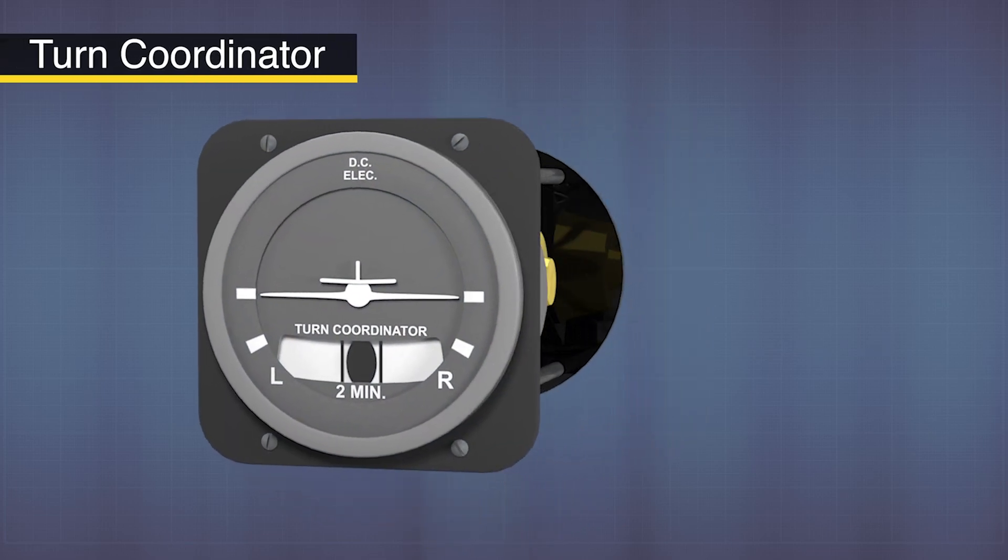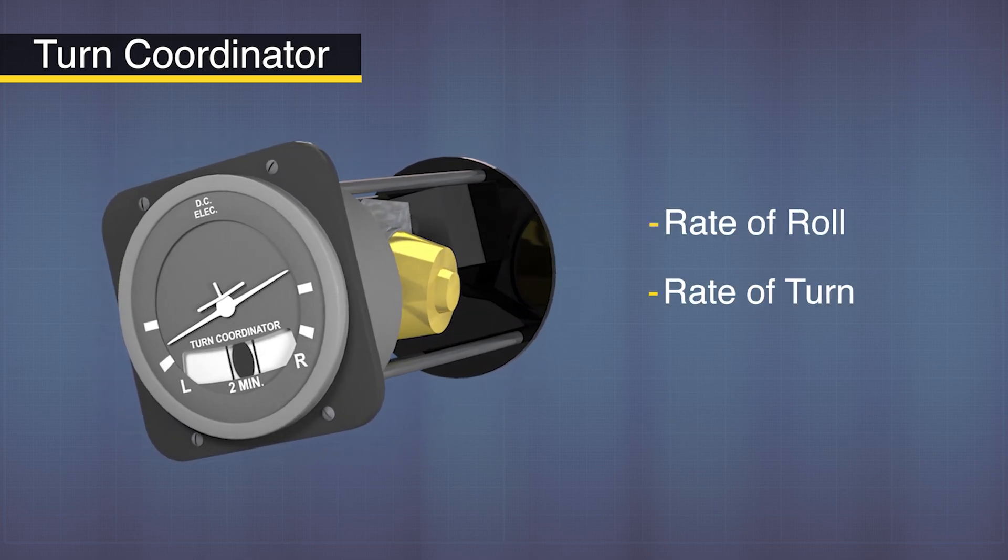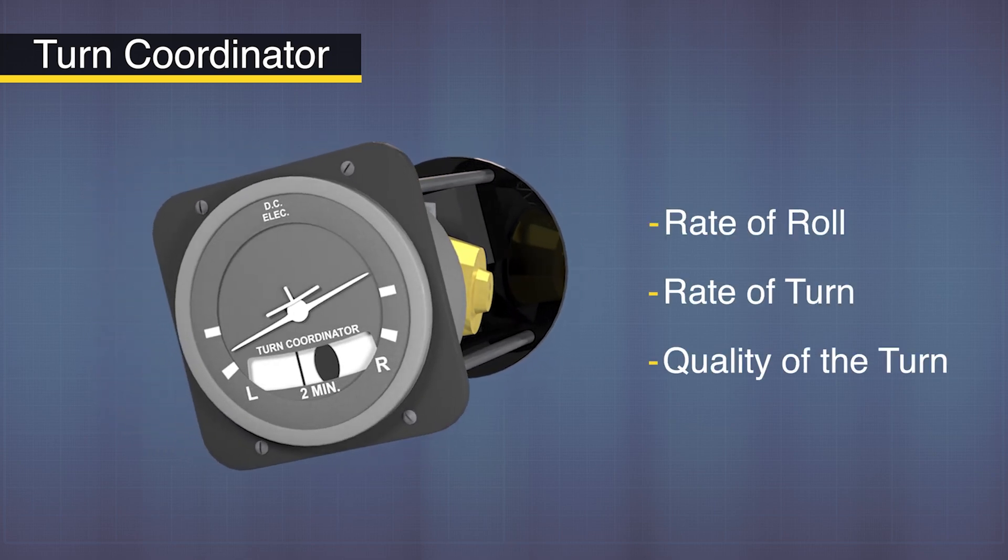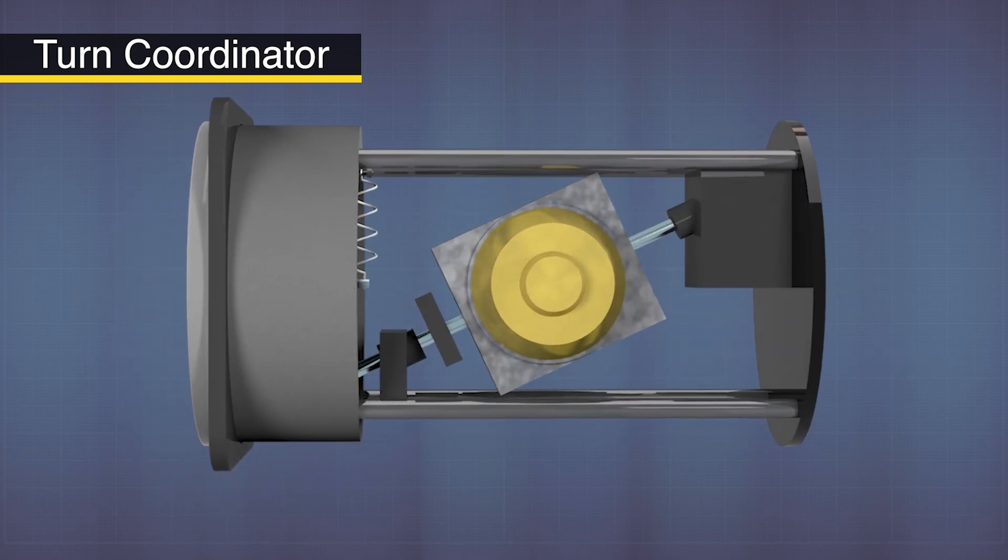Speaking of turning, let's talk about the turn coordinator. This monitors the rate of roll, the rate of turn, and the quality of the turn. The miniature airplane in the turn coordinator is able to show the rate of roll and the rate of turn because the gyro is canted at 30 degrees.